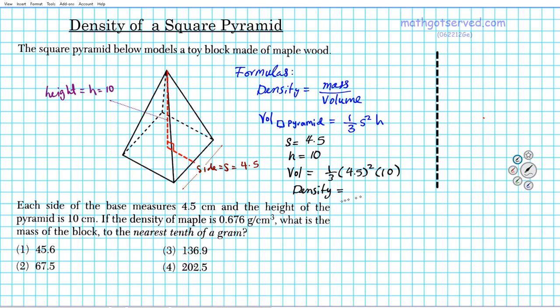And then the density of this solid is given. The density is 0.676. Now what is the mass? That's what we're looking for.